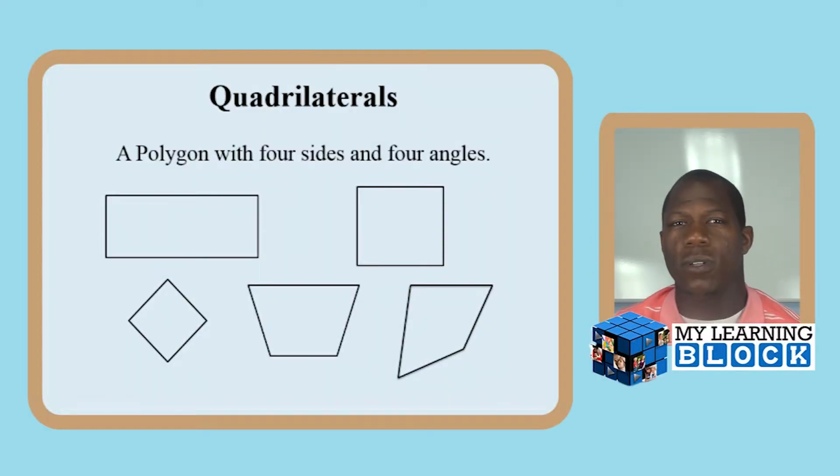We're classifying quadrilaterals because it is an important task. We need to understand that quadrilaterals are polygons with four sides and four angles. We also need to know that there are different types of quadrilaterals.